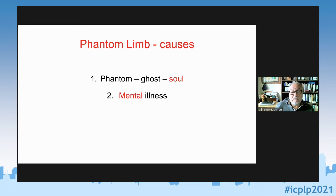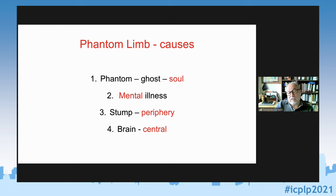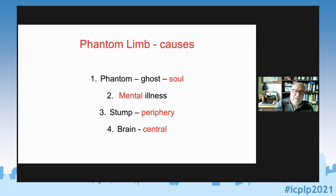Setting aside those historical explanations, the real causes center on two potential elements. One is the stump itself — a peripheral cause — where the damaged nerves develop neuromas and abnormal sensitivity, sending signals to the brain that the arm or leg is still there. The second is the brain: the brain has an image of the body, and even if a part is not there, the central image is still present, so you are still perceiving the absent limb.